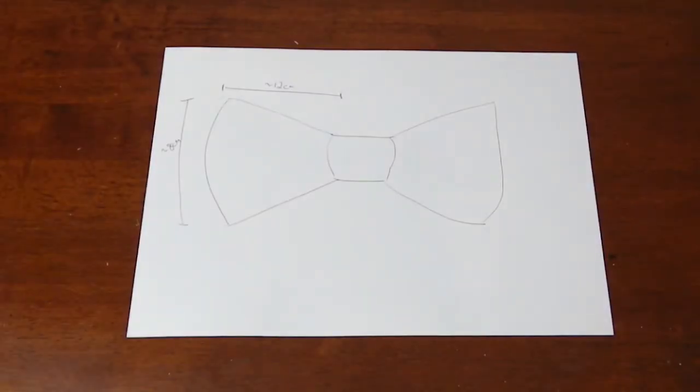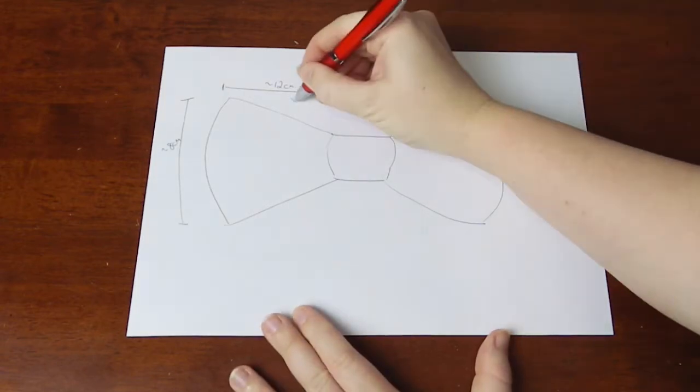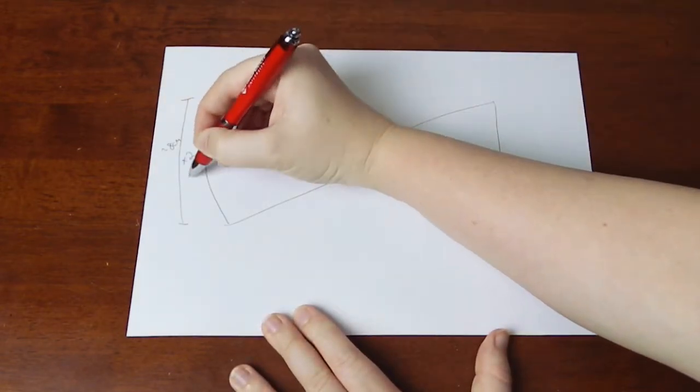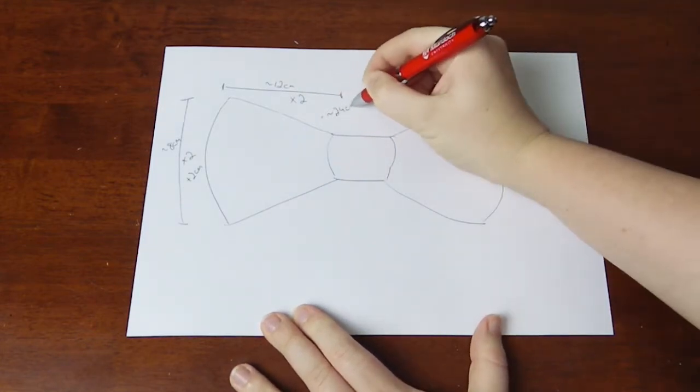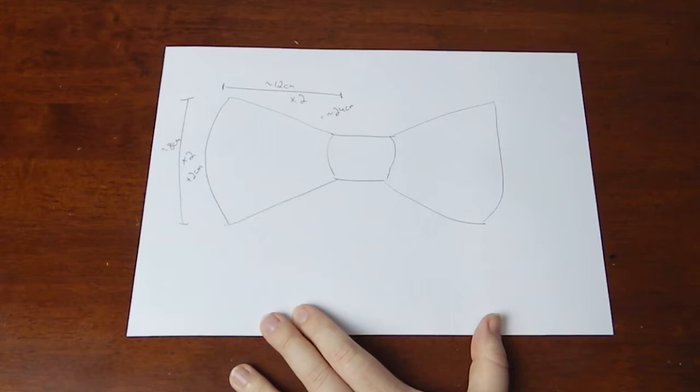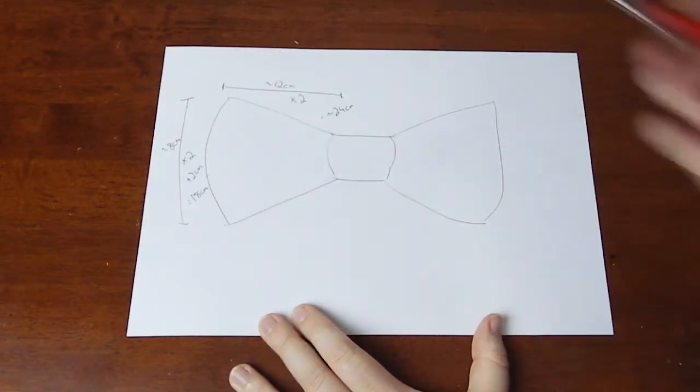First up, decide how big you want your bow to be. I decided I wanted each loop to be 12cm outwards from the centre to the side and 8cm high. I multiplied the height by 2 and added 2cm for seam allowance. For the loop width, I multiplied it by 2. That meant that I needed two rectangles of 24cm by 18cm.